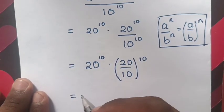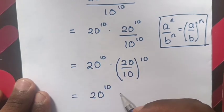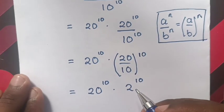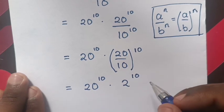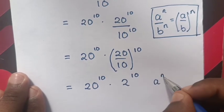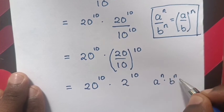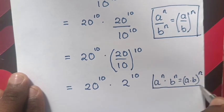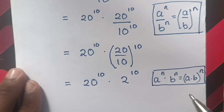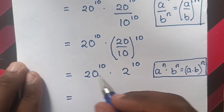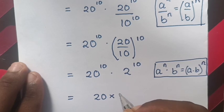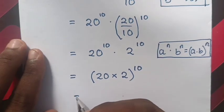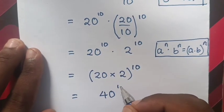So, this will be equal to 20 power 10 times 20 divided by 10, which is 2 power of 10. From here we apply the exponential rule that a power n times b power n is equal to a times b, bracket power n. So, this will be equal to 20 times 2, bracket power 10, which will be equal to 40 power 10.